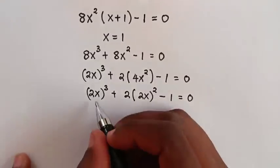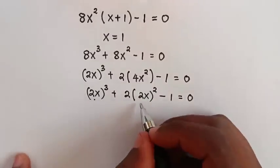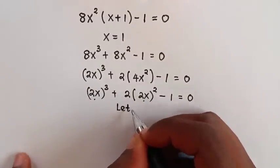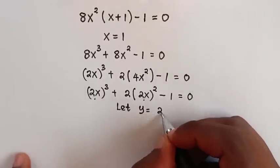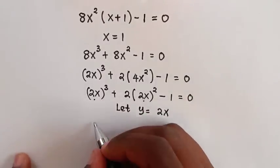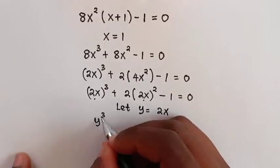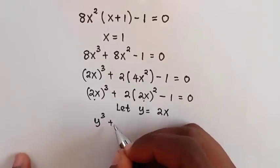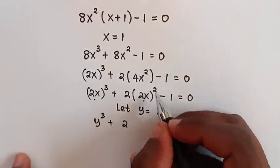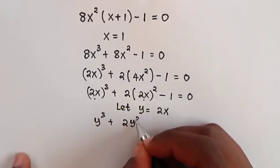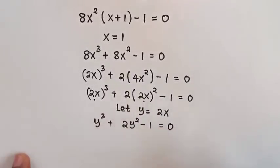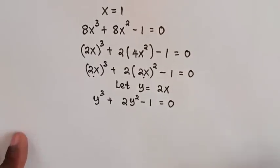From here you can see 2x and 2x are common, so we are going to let y equal to 2x. Then here it will be y cubed plus 2y squared minus 1 is equal to 0.